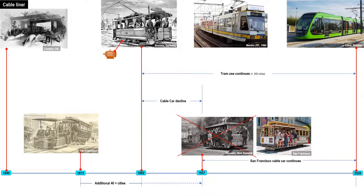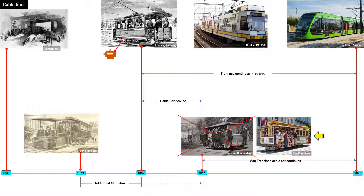LRTs and trams using overhead power lines would consistently continue to be used up to the present time, with more than 300 cities in the world using them. Meanwhile, the cable car continued to decline. The second-to-last cable liner survivor in New Zealand closed in 1957, leaving only San Francisco. The tram was the clear winner because it was simpler and cheaper to build, maintain, and operate.